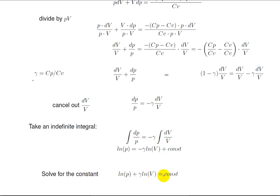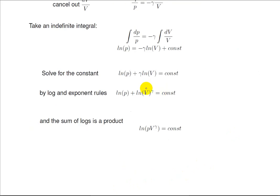Now we solve for the constant before we begin doing some real algebra. Here I've used the exponent rules to move gamma up to be an exponent right there, from there to there. And then I've used the sum of logs as a product to combine the two log terms and make it log of PV to the power of gamma.